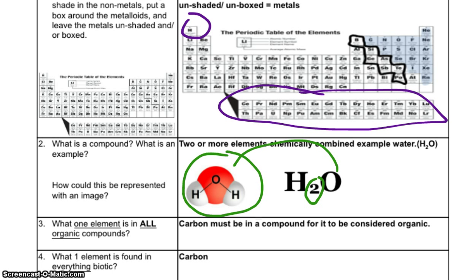Number 3. What one element is in all organic compounds? We call these the bio compounds, or the bio elements. Carbon must be in a compound for it to be considered organic. And remember, carbon is the one element that's found in everything living or once was living. And that answers question number 4. What element is found in everything biotic? Biotic means living. Carbon.